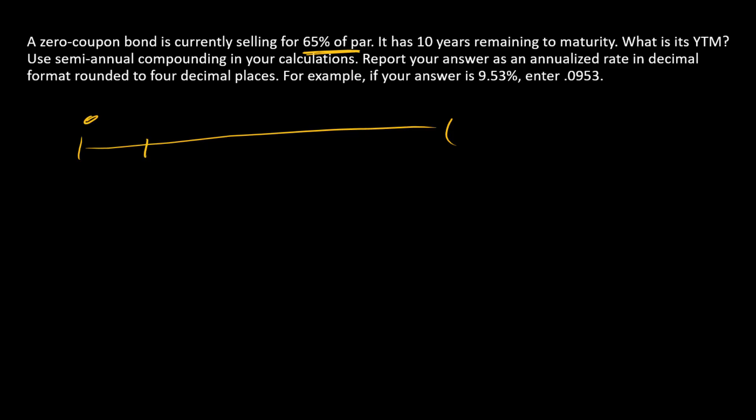For the zero coupon bond, recall that we have no payments whatsoever until the par value repayment at maturity, which is 10 years away. In our calculations, we're going to think about semi-annual periods, so we'll put 20 periods on our timeline. Setting par value equal to 100, we have a $100 cash flow at maturity.